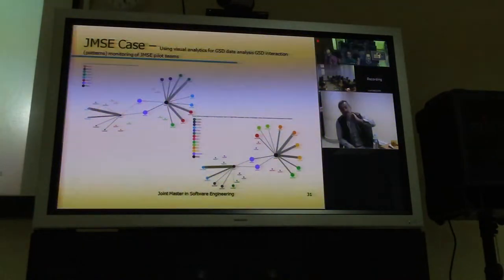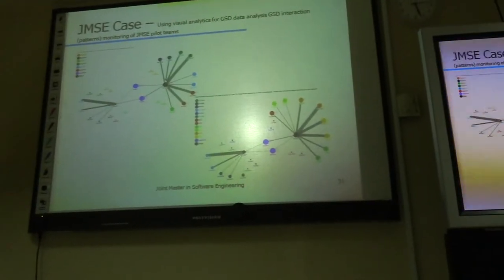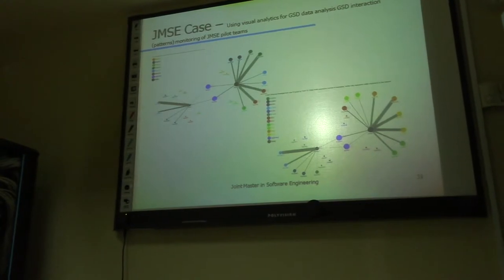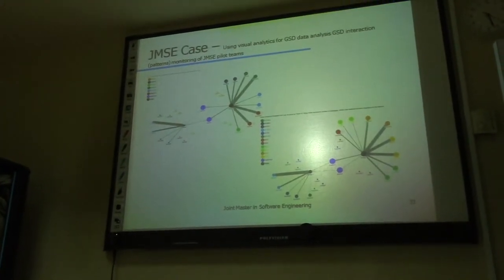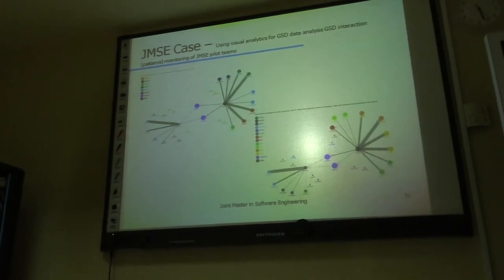That is a collaboration visualization because the thicker the line, the thicker the line, the more communication between these two people. That can mean two things. Either these people had a very important task and they were communicating back and forth. Or secondly, they had a problem and they were trying to clarify it so they were working back and forth.